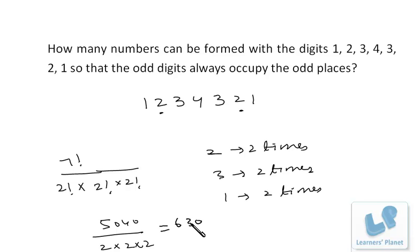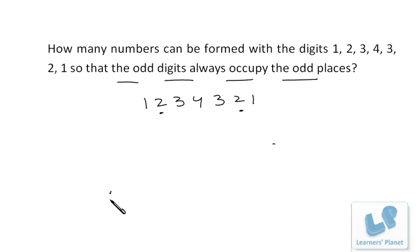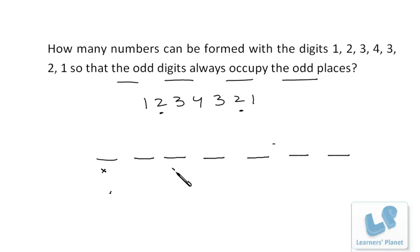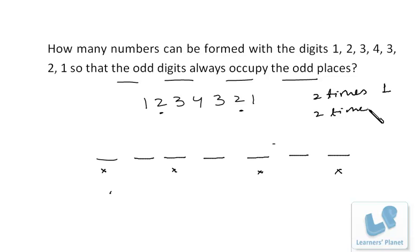Now the condition is that the odd digits must always occupy the odd places. We have seven places: 1, 2, 3, 4, 5, 6, and 7. The odd places are 1, 3, 5, and 7 — so we have four odd places. The odd digits we have are 1, 1, 3, and 3 — that is four odd numbers. So we have four odd places and four odd numbers to fill them.